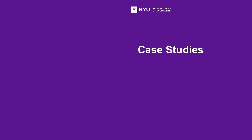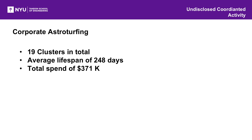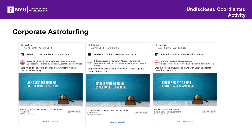Moving on to the less benign patterns: first, we found corporate astroturfing. This is pretty predictable and certainly not unique to social media. We found 19 clusters of corporate astroturfing pages with an average lifespan of 248 days and a total spend of $371,000. These include various citizens against lawsuit abuse groups that don't try to create the appearance of being a local grassroots group, but all function together.